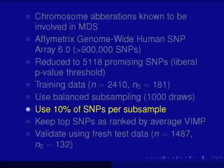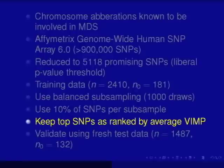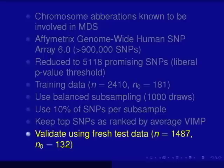I did this 1,000 times. For each of these data sets, I grew a classification forest. In doing each analysis, I also reduced the SNPs further — from the 5,000 SNPs, I took 10% of these SNPs in each analysis. This has to do with the size of N, the sample size, relative to the dimensionality P. From each of the 1,000 analyses, you get a VIMP for each variable, which you can then rank. I kept the top 200 SNPs as ranked by the average VIMP.